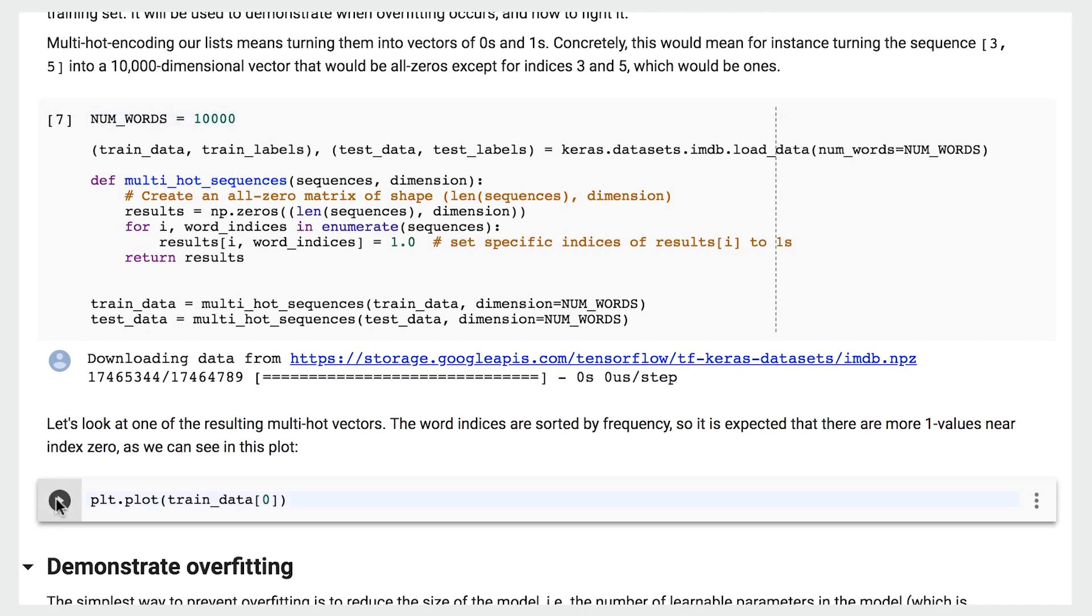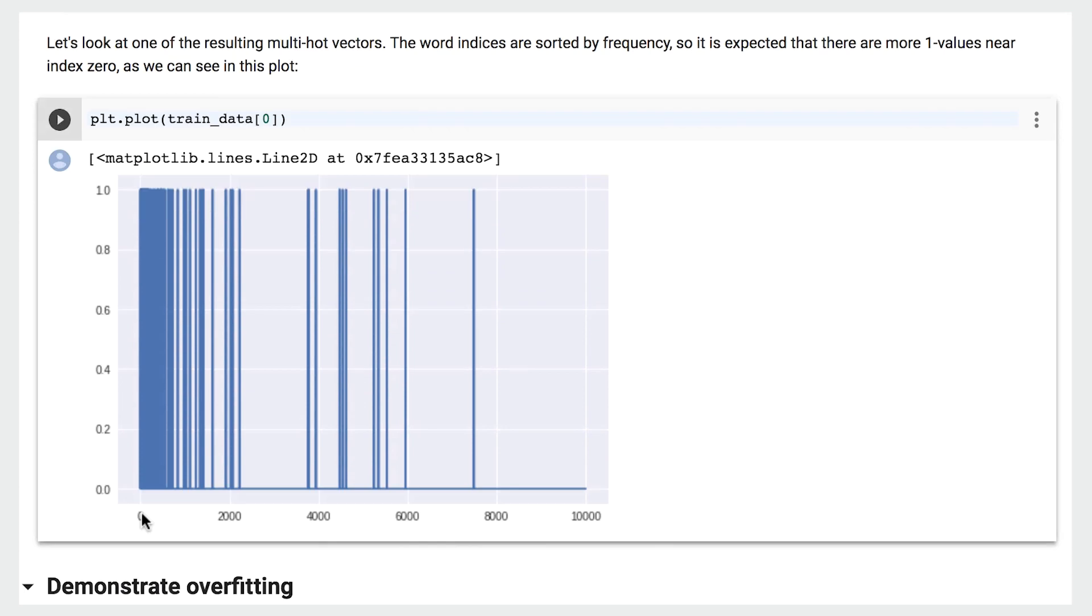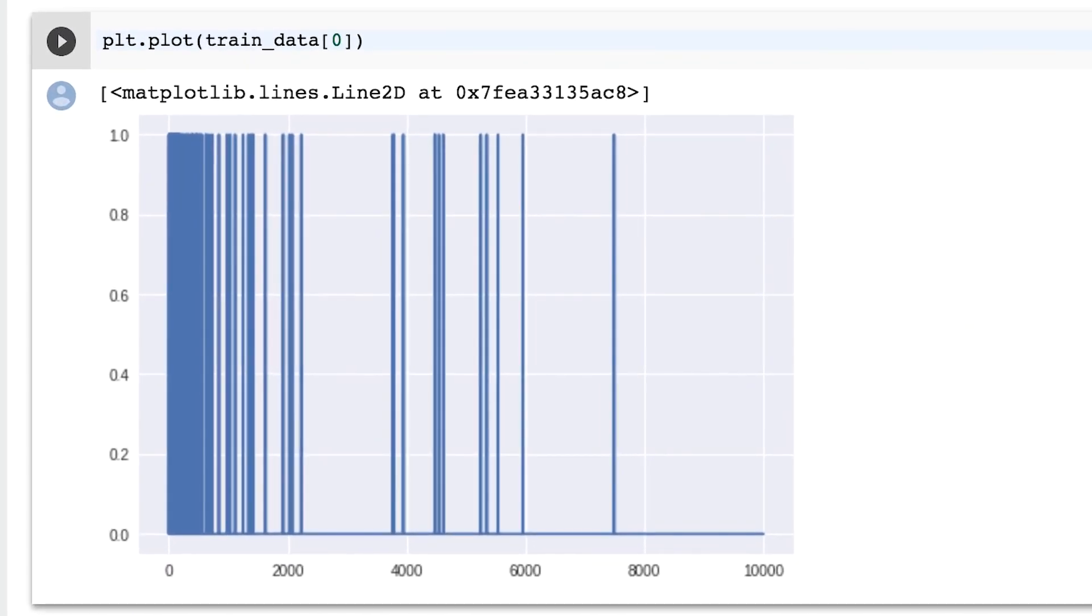Here, we plot the first training data example, where the y-axis indicates the hot encoding, and the x-axis is the word ID. You can see we mostly have words with low IDs, which makes sense, since these are the most common words used in the reviews.